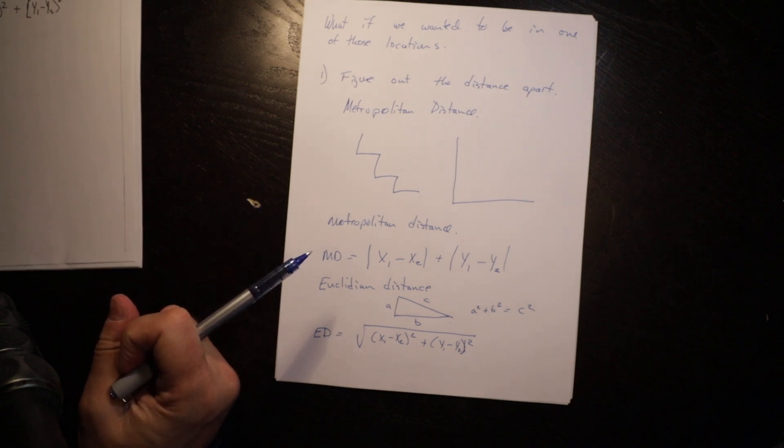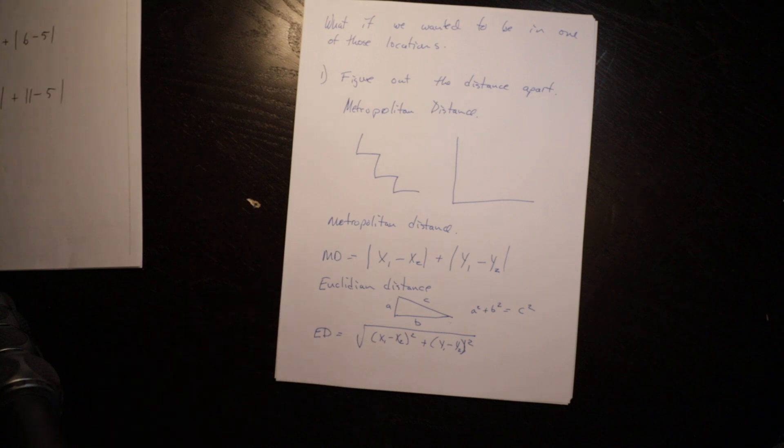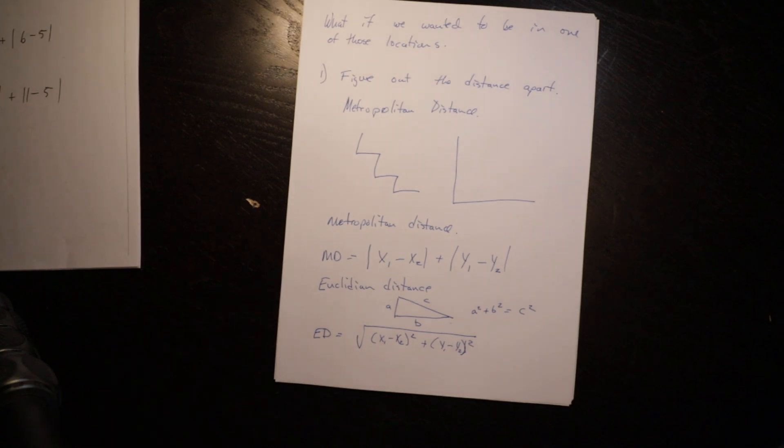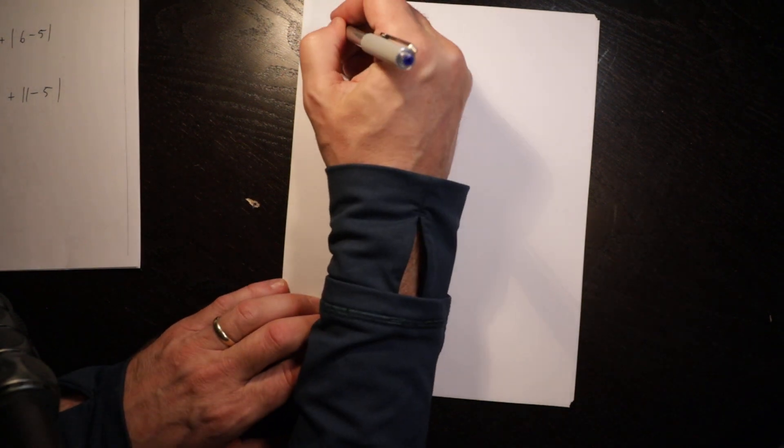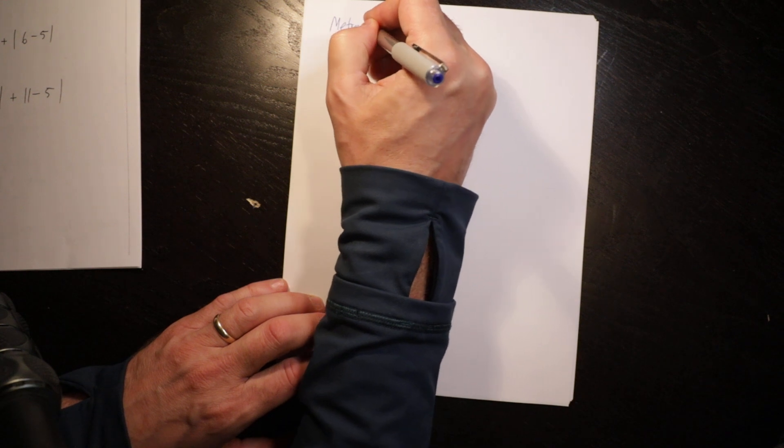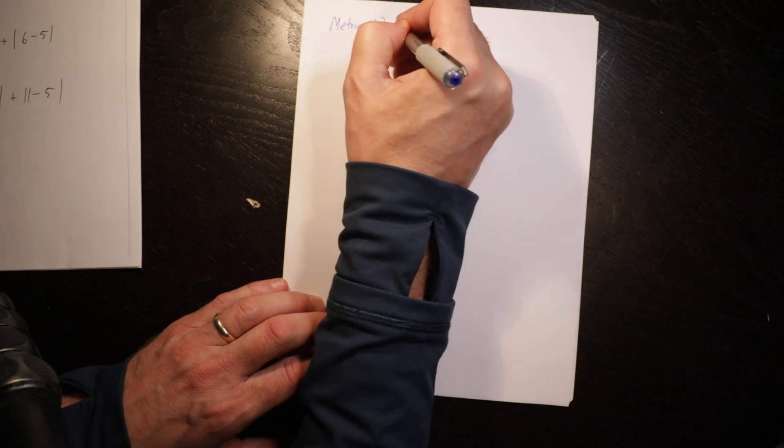Generally for long distances we'll use Euclidean distances and for shorter distances we'll use metropolitan, and in most cases you'll be told which one to use. So let's go back to our example. The metropolitan distance is what we're going to use.